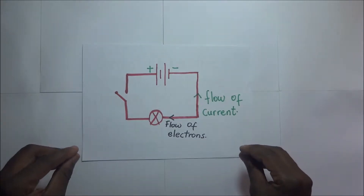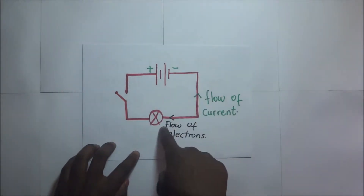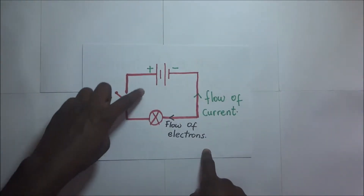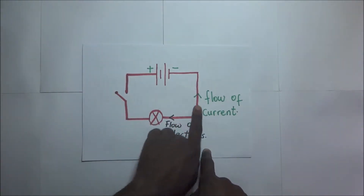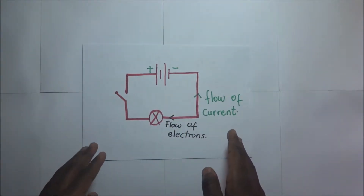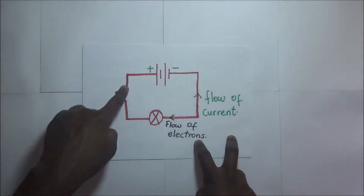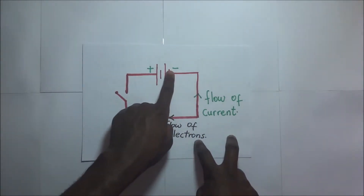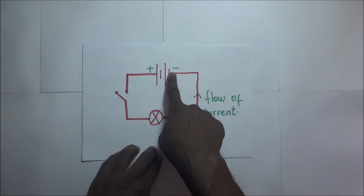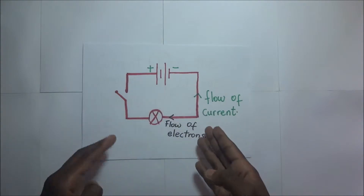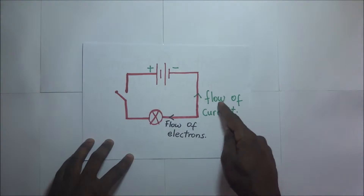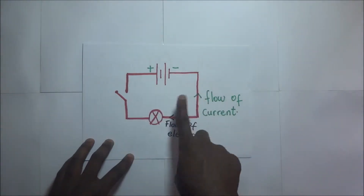When looking at the flow of current in a circuit like this one, current will always flow from the positive side to the negative side. That is according to the conventional direction — it's called the conventional direction. However, the electrons that are actually flowing in the circuit flow from the negative side to the positive side. In the diagram, the flow of electrons is in that direction, and the flow of current is in the reverse direction — from positive to negative.